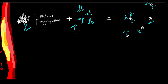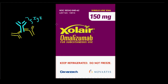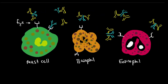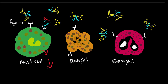An example of a humanized monoclonal antibody is omalizumab, also known by its trade name Xolair. This drug inhibits the binding of IgE to the Fc-epsilon receptor on the surface of mast cells, basophils, and eosinophils. Xolair binds to free IgE to interrupt the allergic inflammatory cascade of asthma. The IgE Fc-epsilon receptor complex, when bound to an antigen, activates degranulation of granulocytes, releasing inflammatory mediators such as histamine.